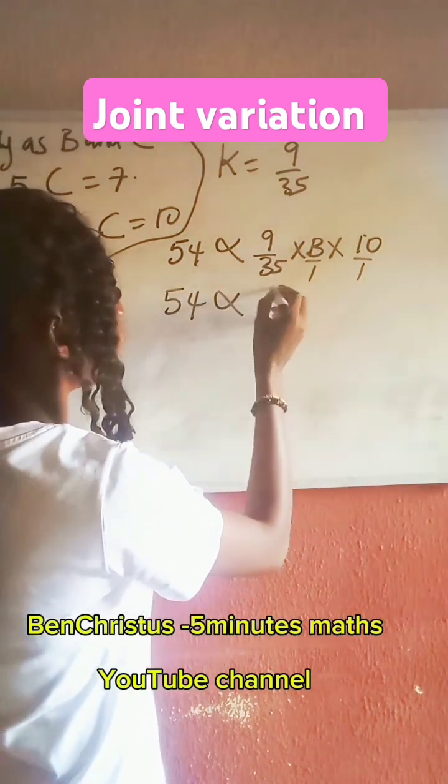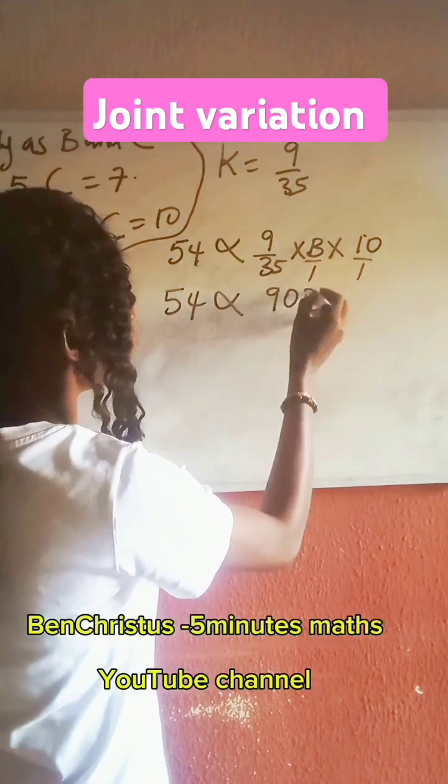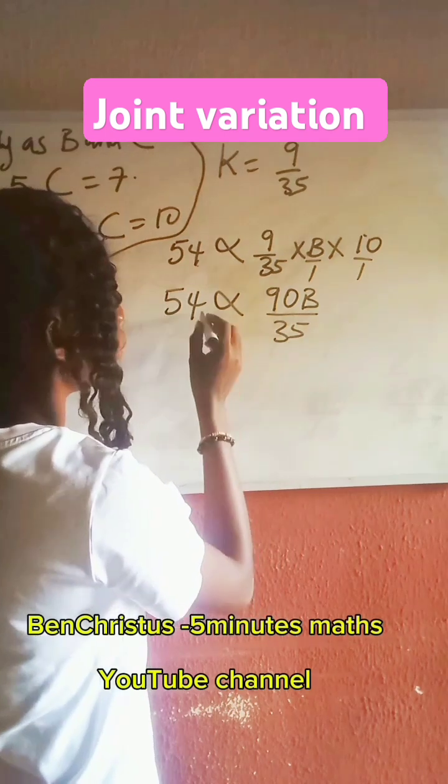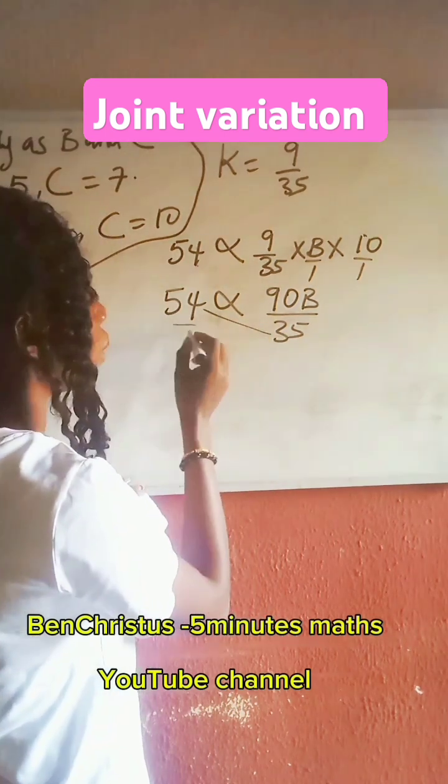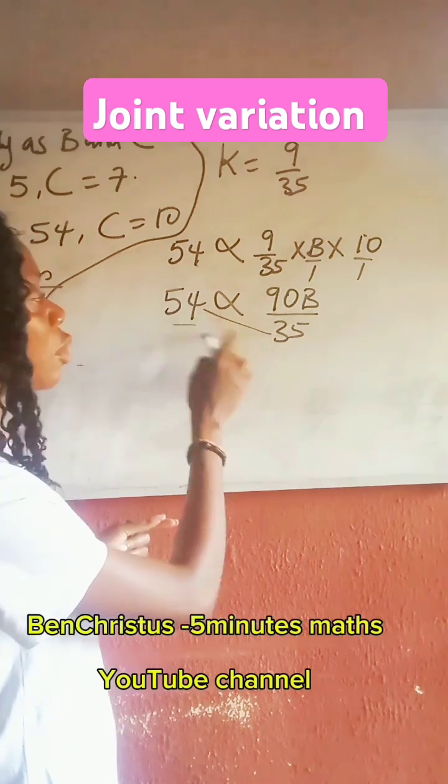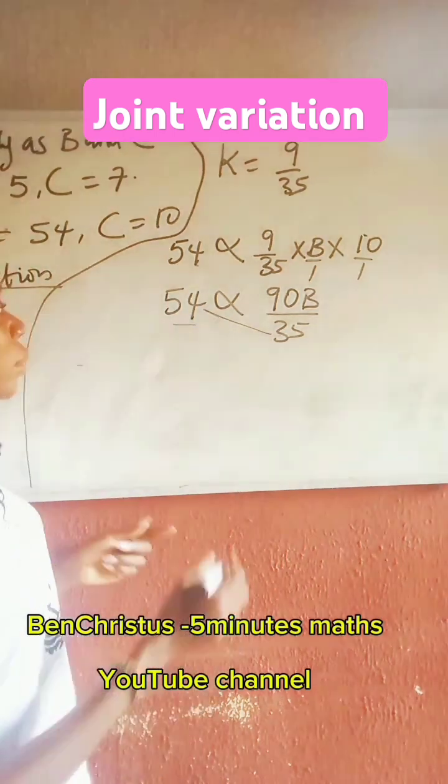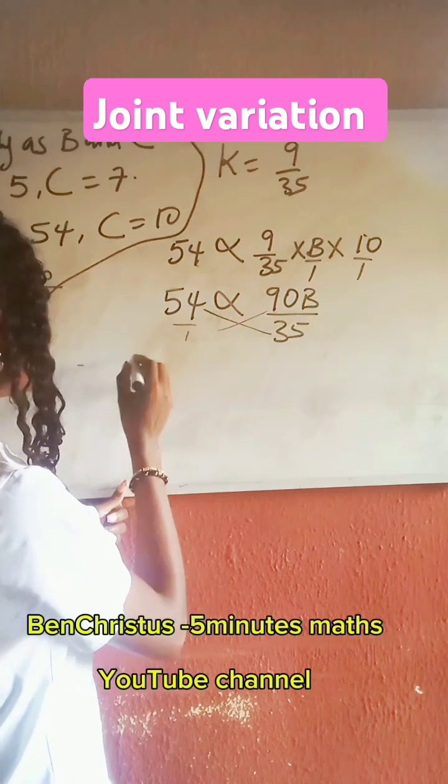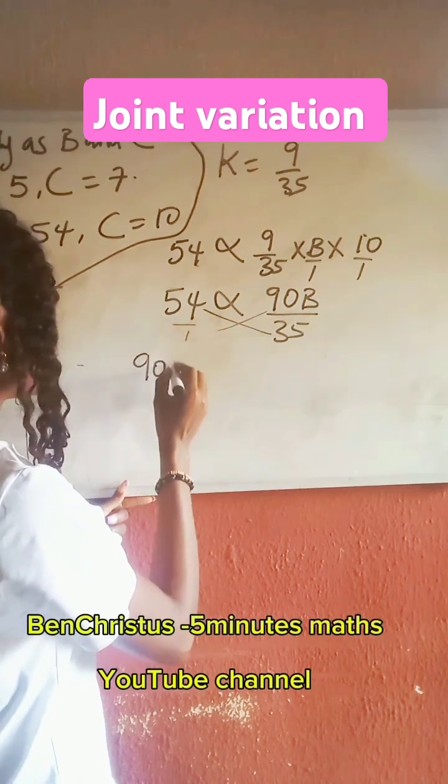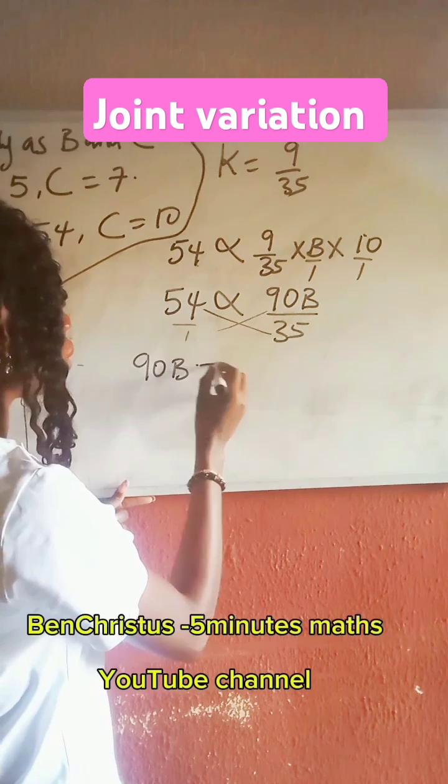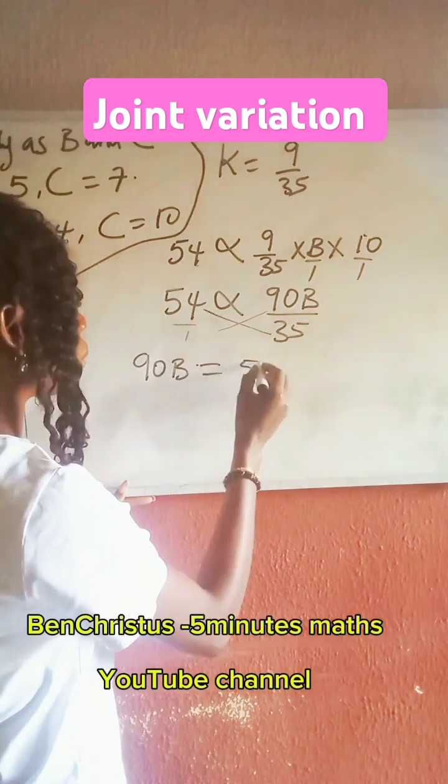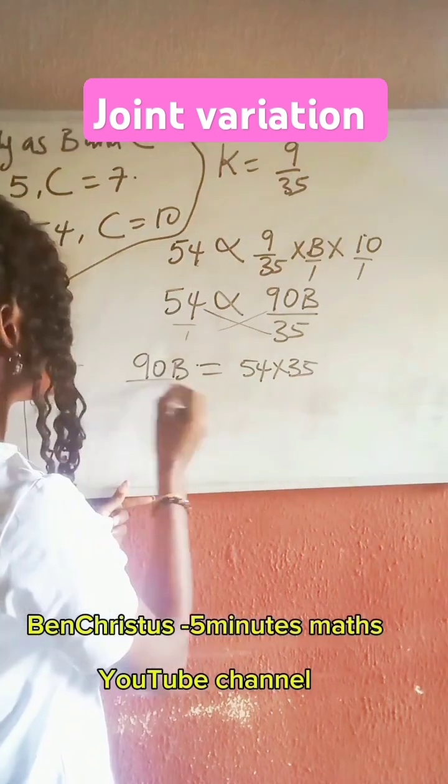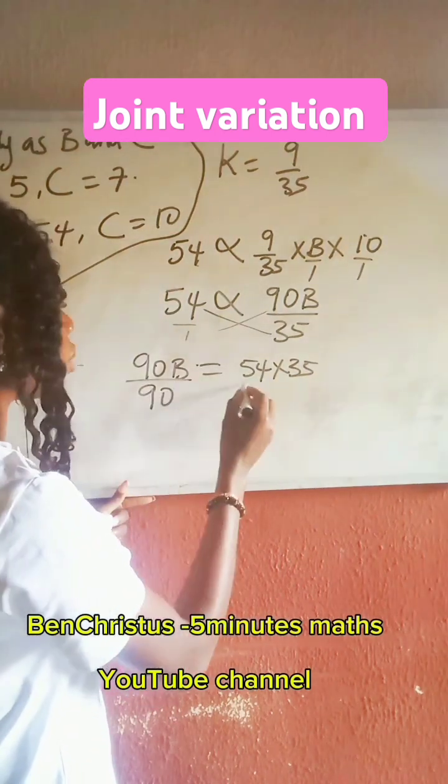It will vary as 90B all over 35. So we cross-multiply. We have that 90B equals 54 multiplied by 35. Divide both sides by 90 to make...